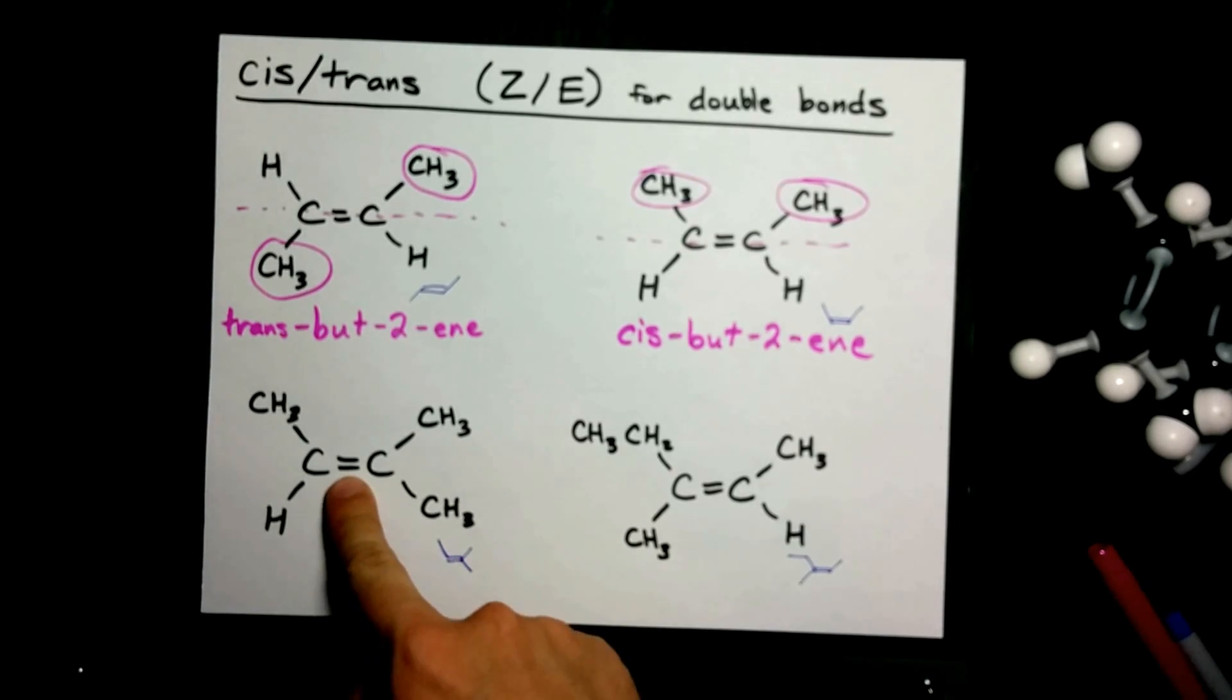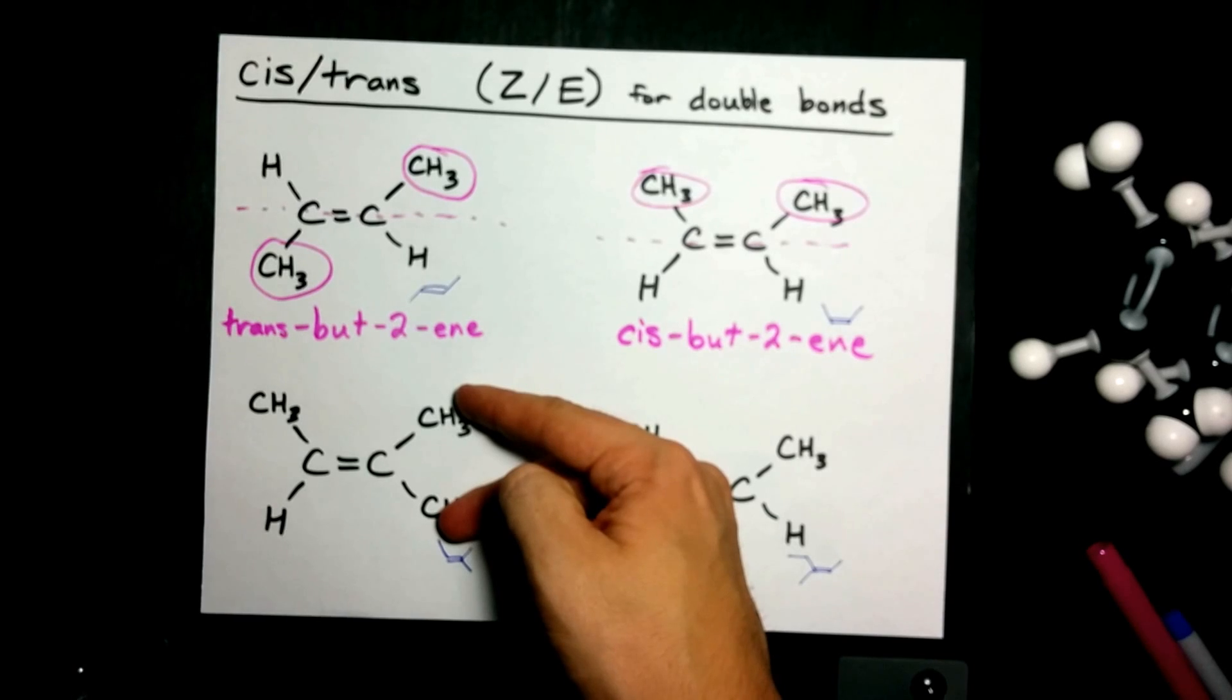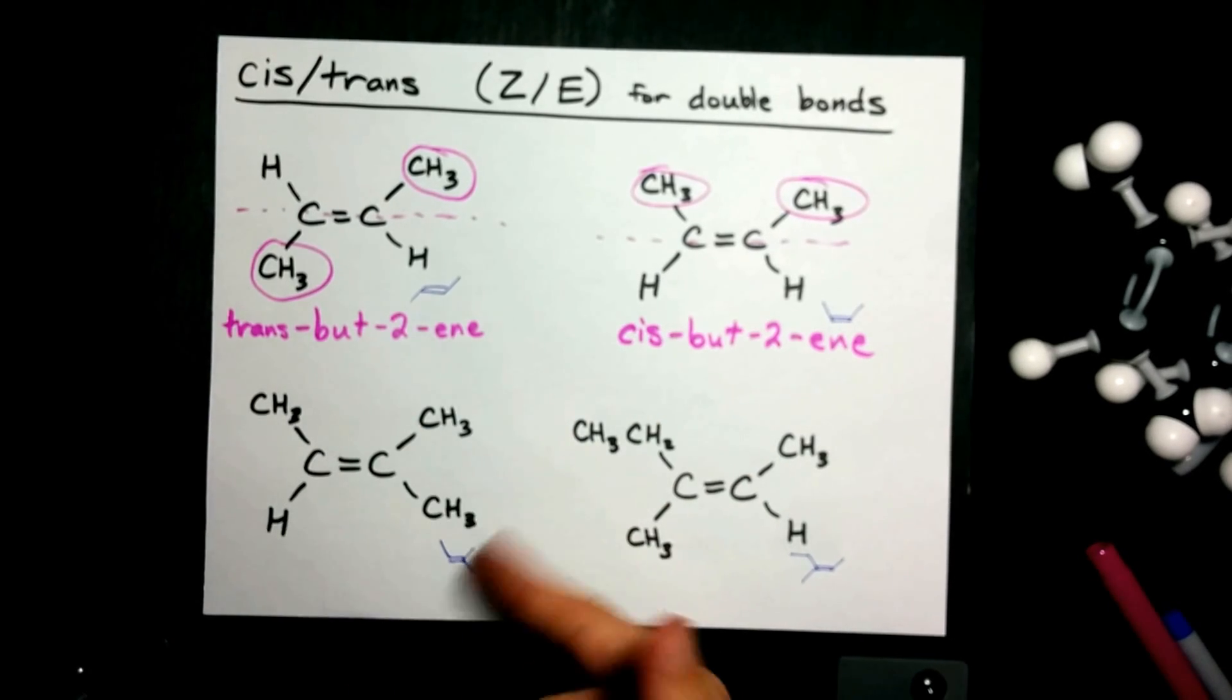If we could rotate this double bond, which we can't, if we could, these would replace each other, and it would still be the exact same molecule because they're both CH3s.